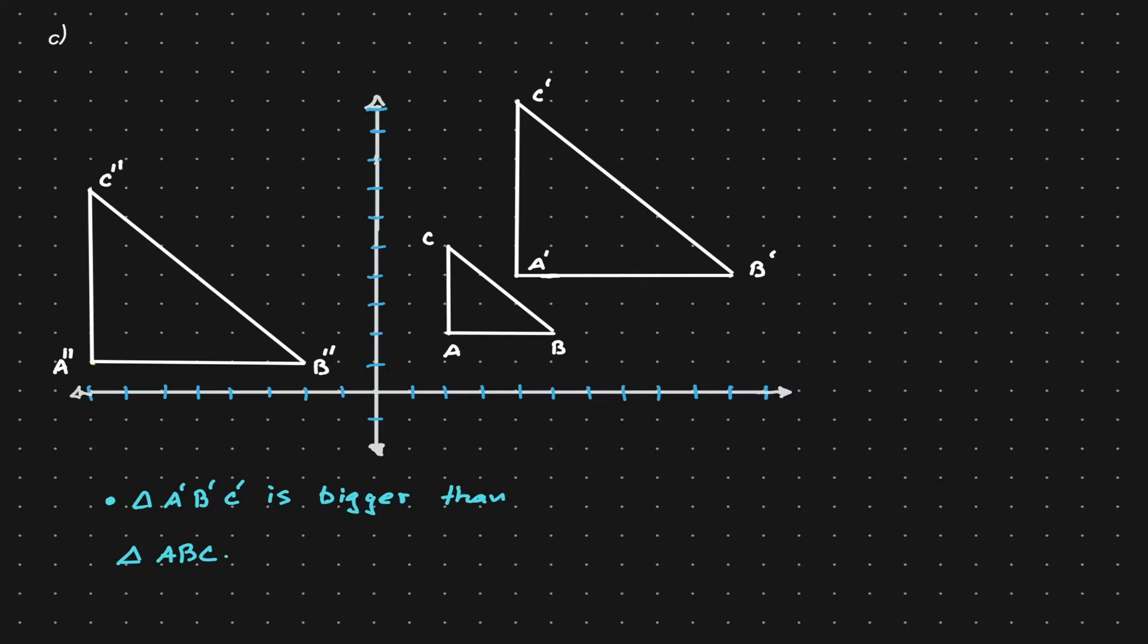So let's try to identify the scale factor in that dilation. The line segment AB has a length of three. The length of A prime B prime is a value of six. So it seems like the scale factor is a value of two. But let's verify this by looking at other line segments.